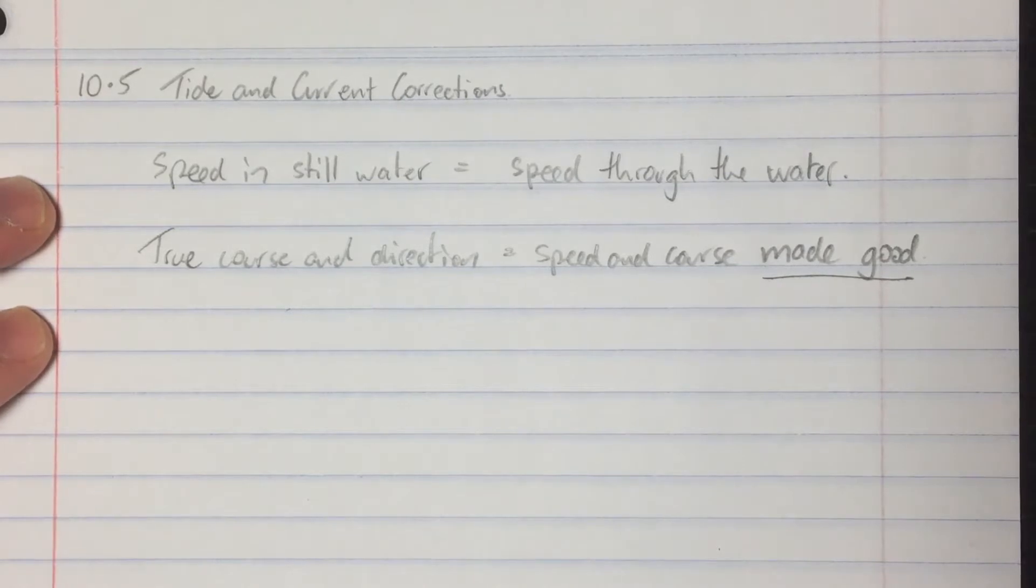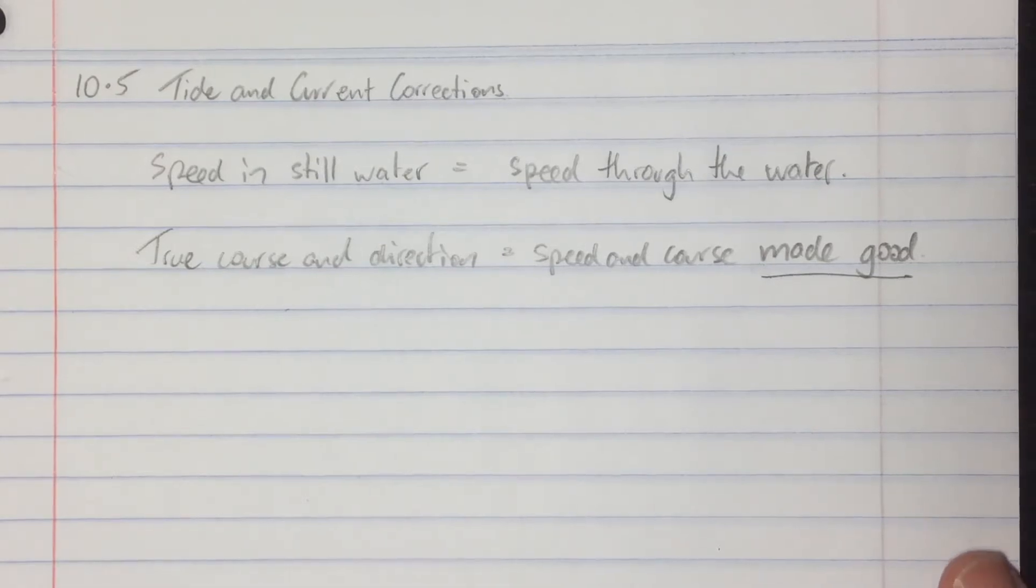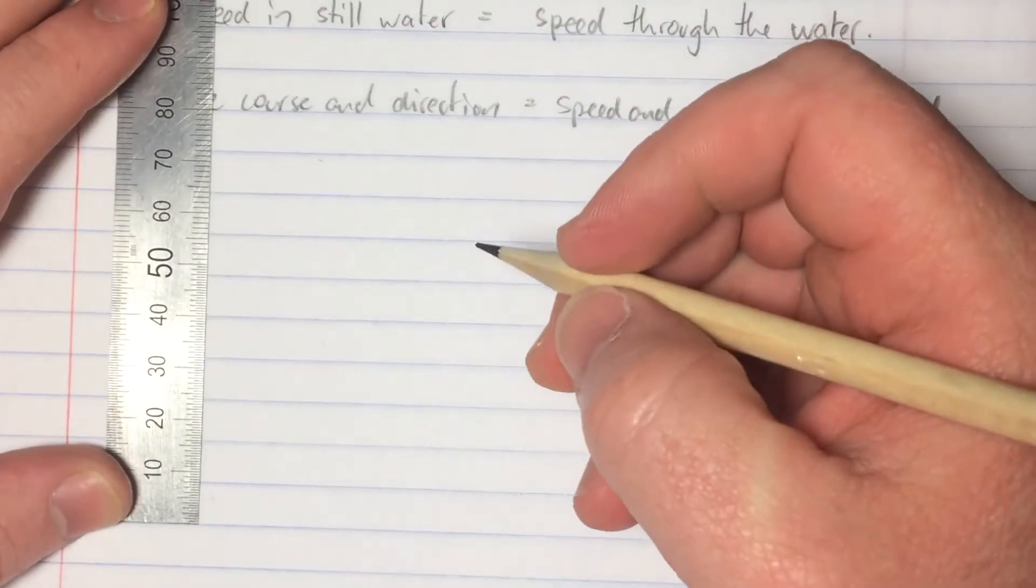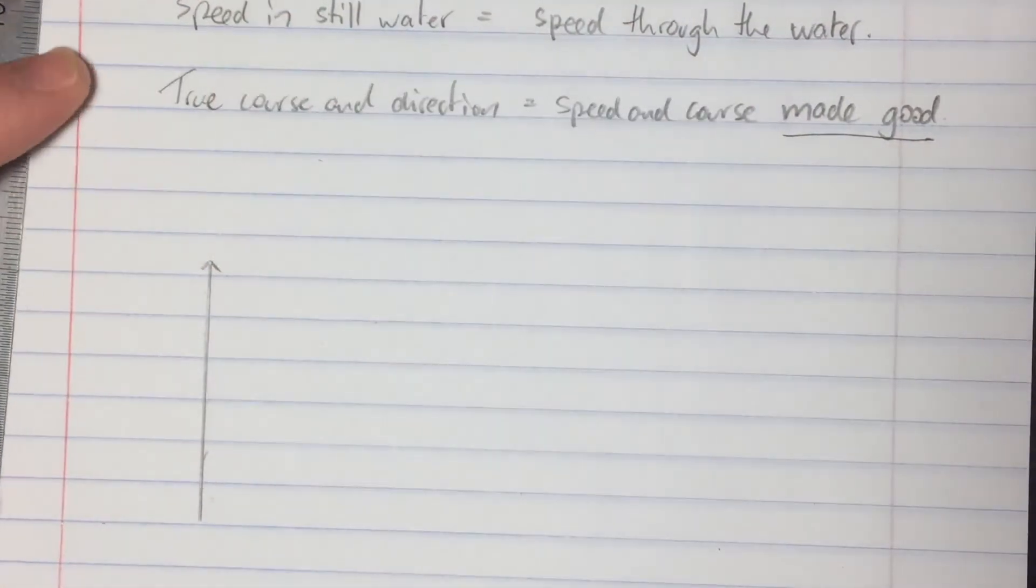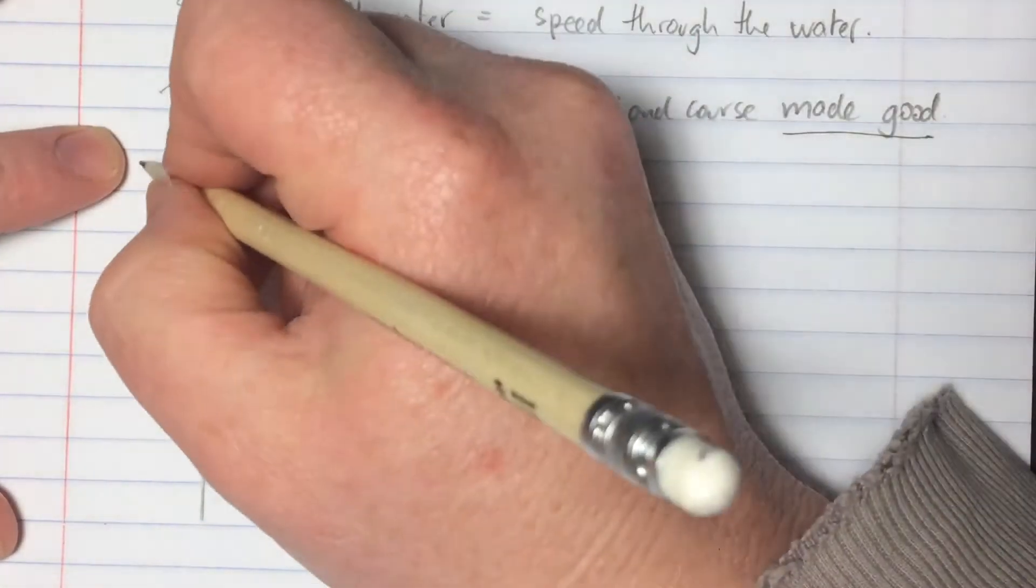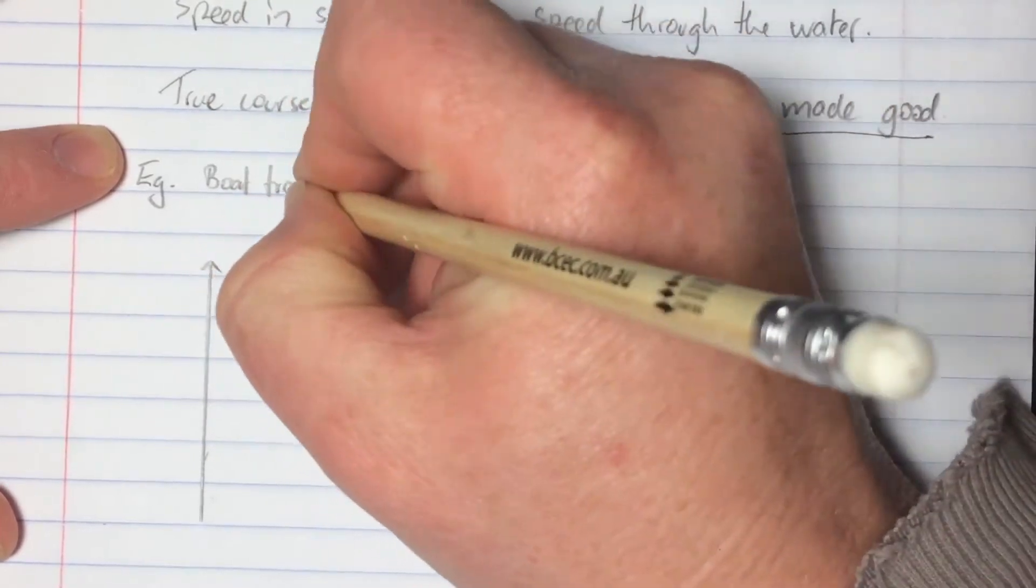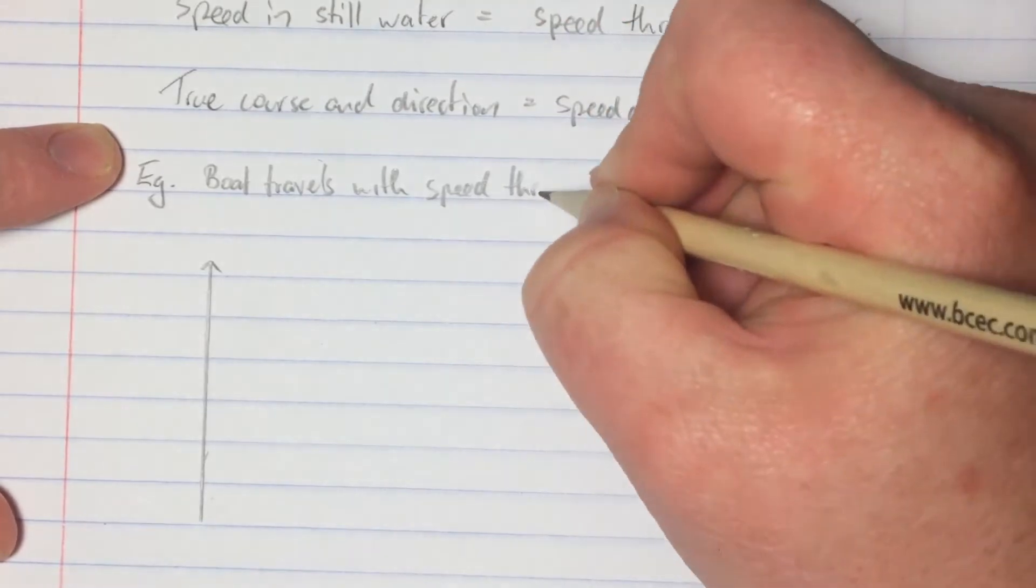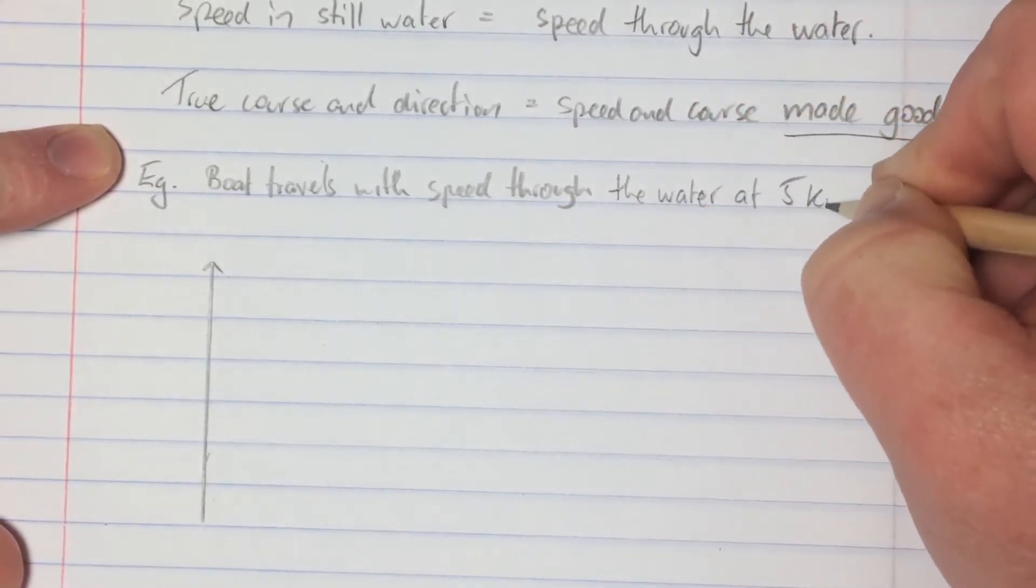So let me give you an example. If the speed through the water of a boat is five knots in a northerly direction, we can represent that by drawing a line five centimeters long in a northerly direction. So this line represents a boat travelling through the water at five knots.